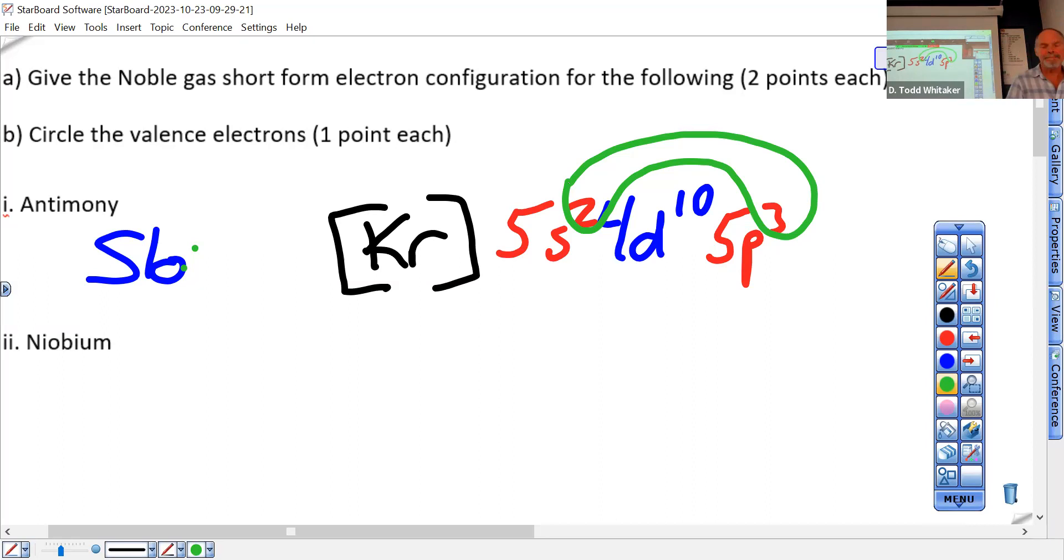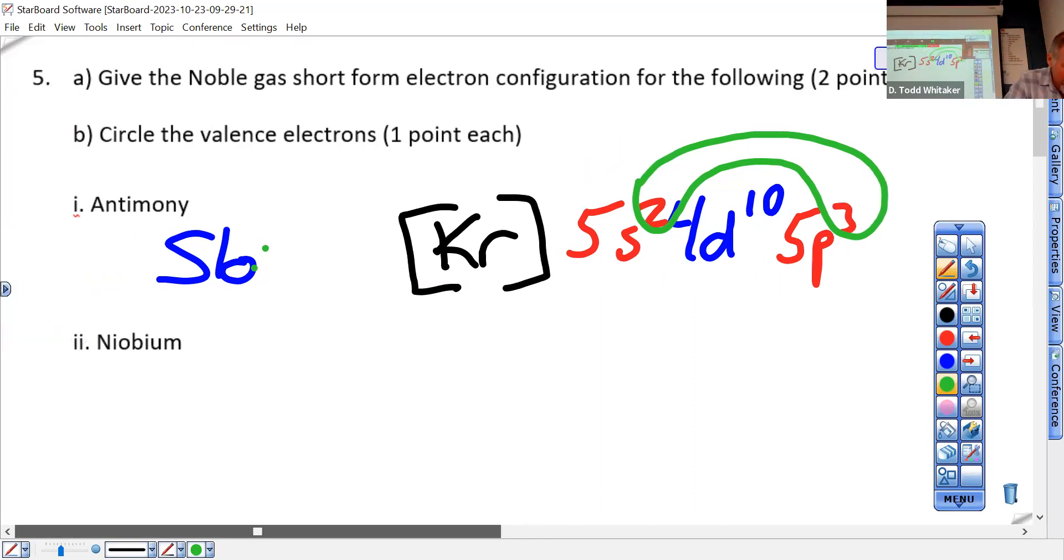Okay, niobium. What symbol is niobium? Nb. All right, where is niobium on the old periodic table? 41, right?